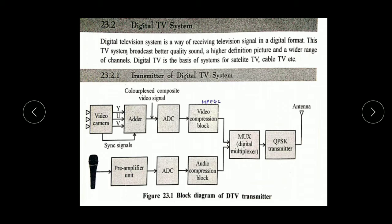Digital television system is a way of processing television signals in a digital format. In earlier days we used analog TV systems — monochrome, black and white TVs. But in modern times, we generally use the digital TV system. In a digital TV system, we need the signal in the format of digits, bits — 0 and 1 format. This TV system broadcasts better quality sound and high definition pictures and a wider range of channels. Digital TV is the basis of the system for satellite TV and cable TV.